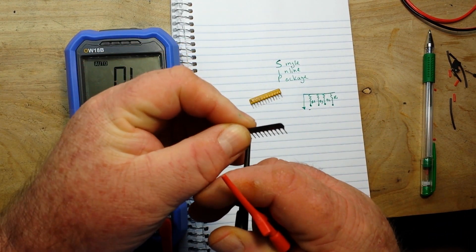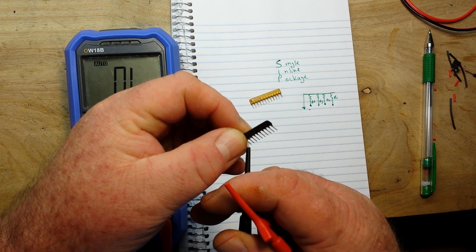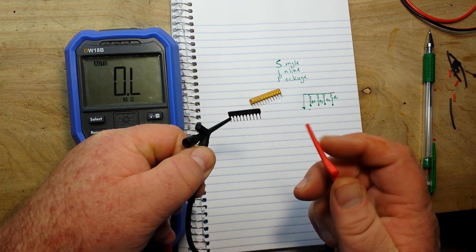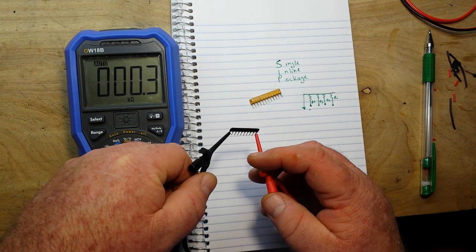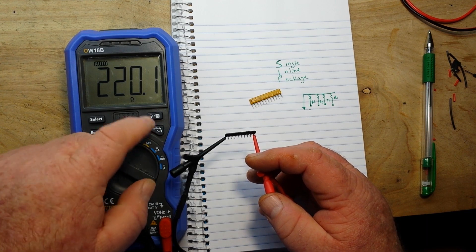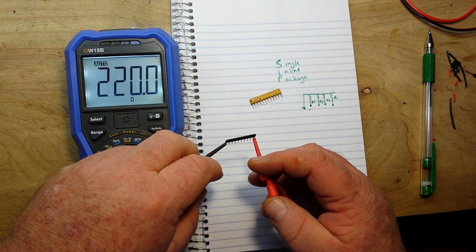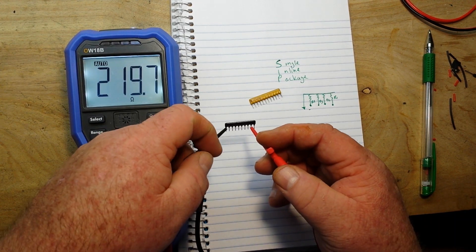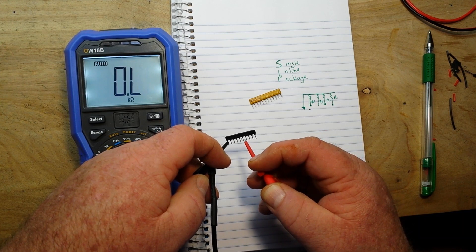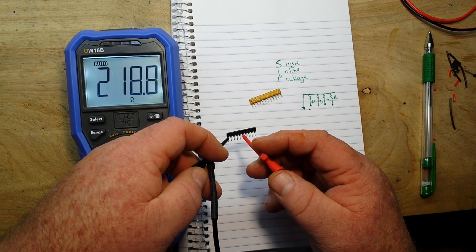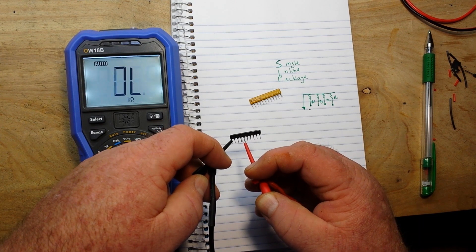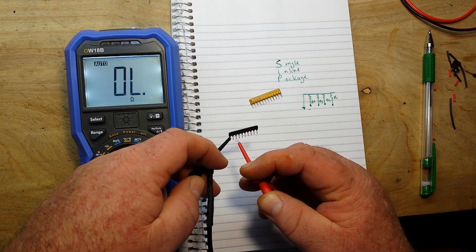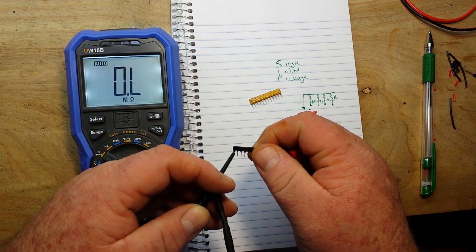So if we hook up our meter here with one lead on the dot or the common pin, and then we can come out here and measure - here's 220 ohms. Move over to the next one, that's 219.7, and as we move down here there's a small amount of variance but basically they are all 220 ohms and all common to that pin.